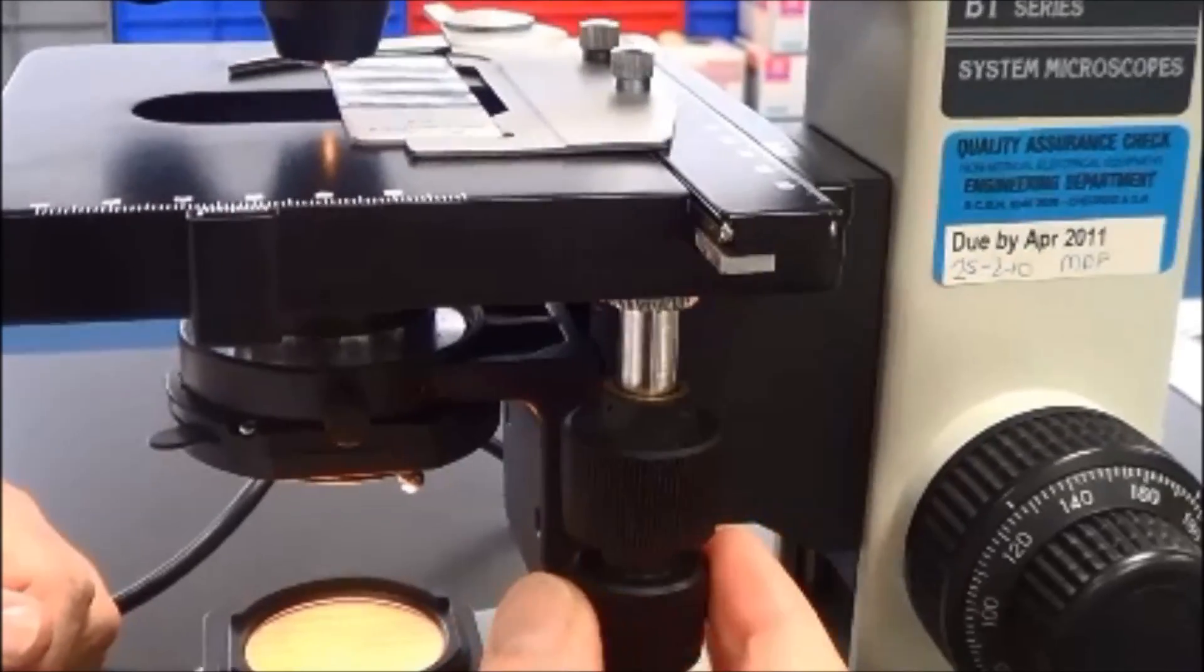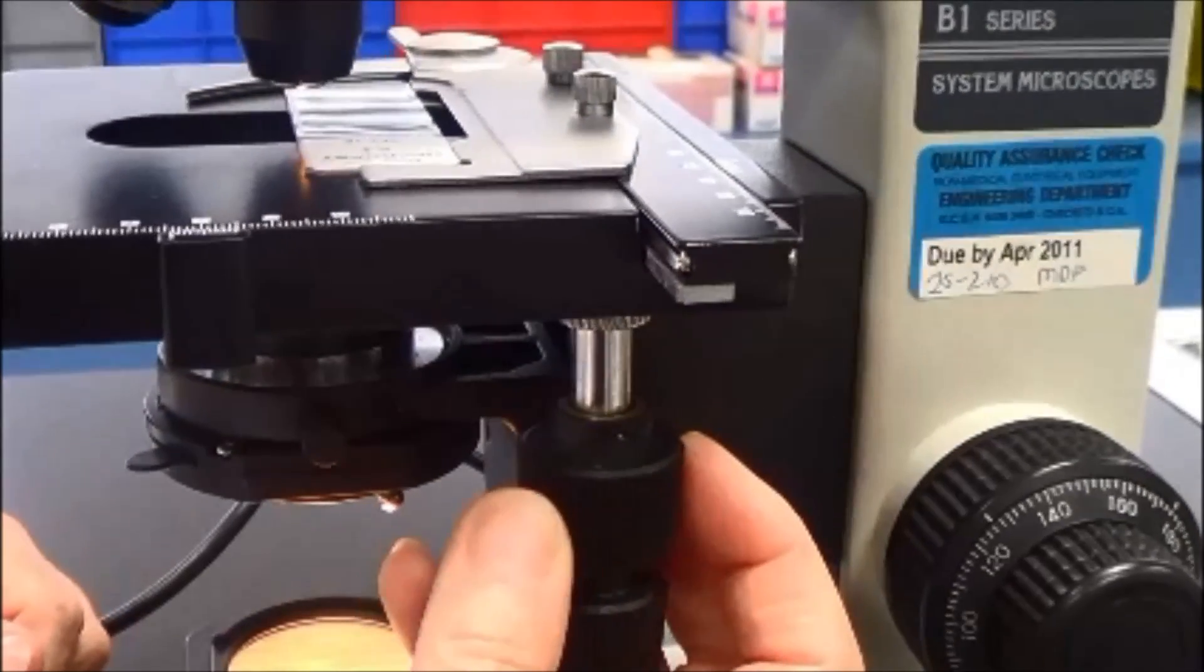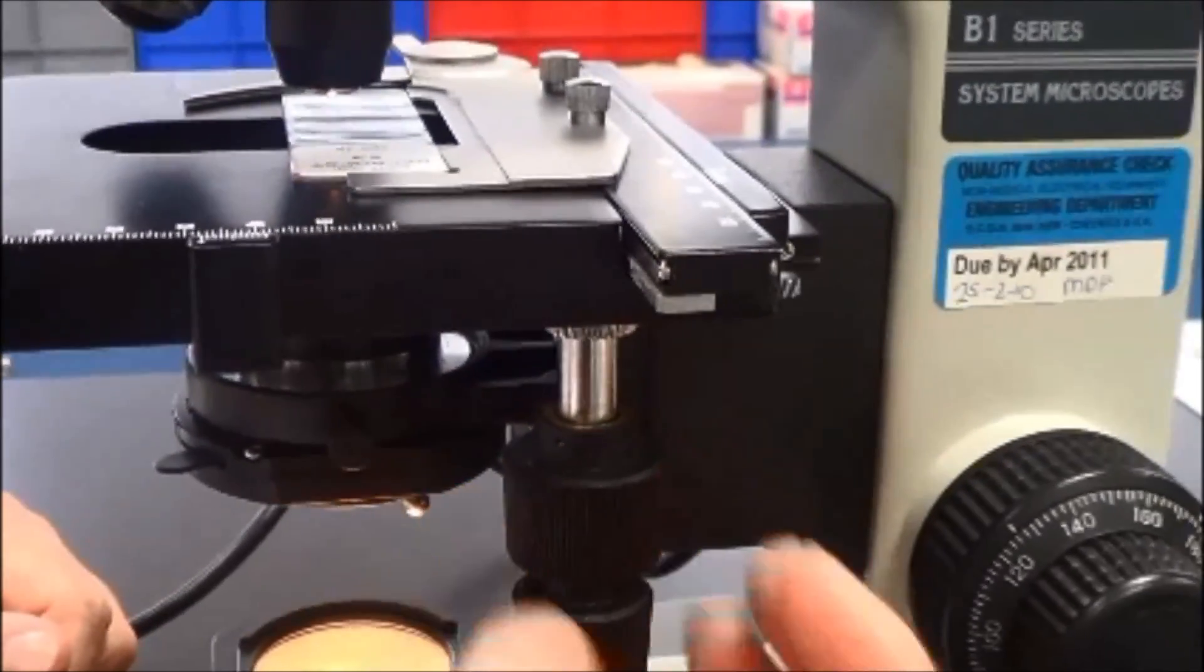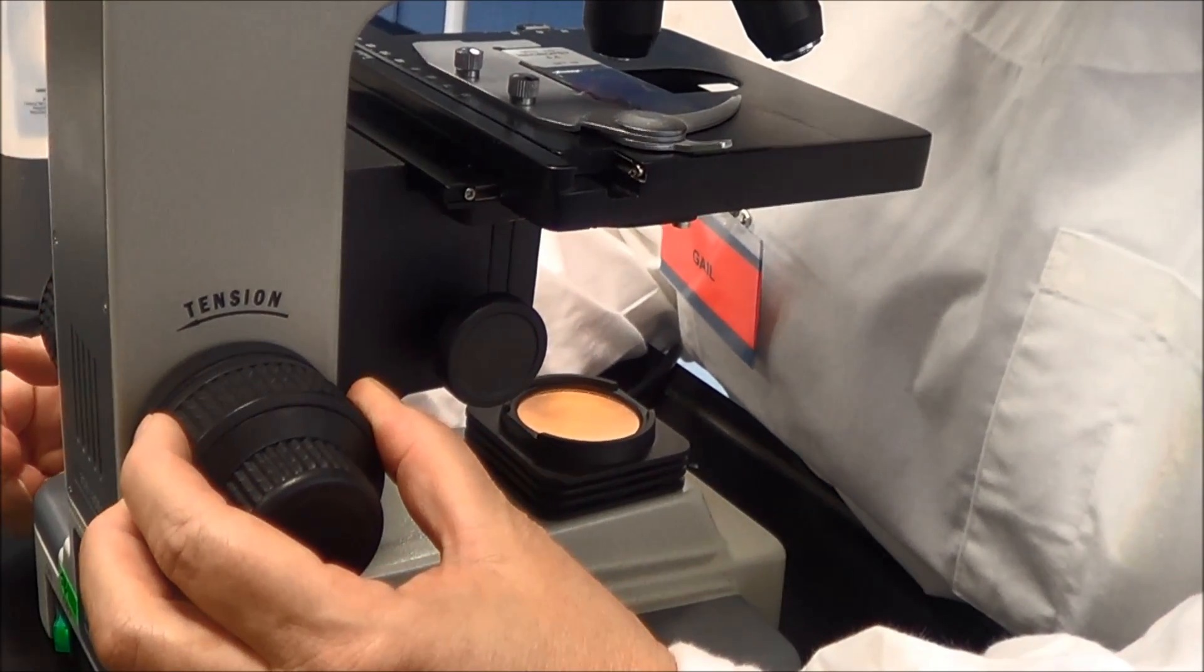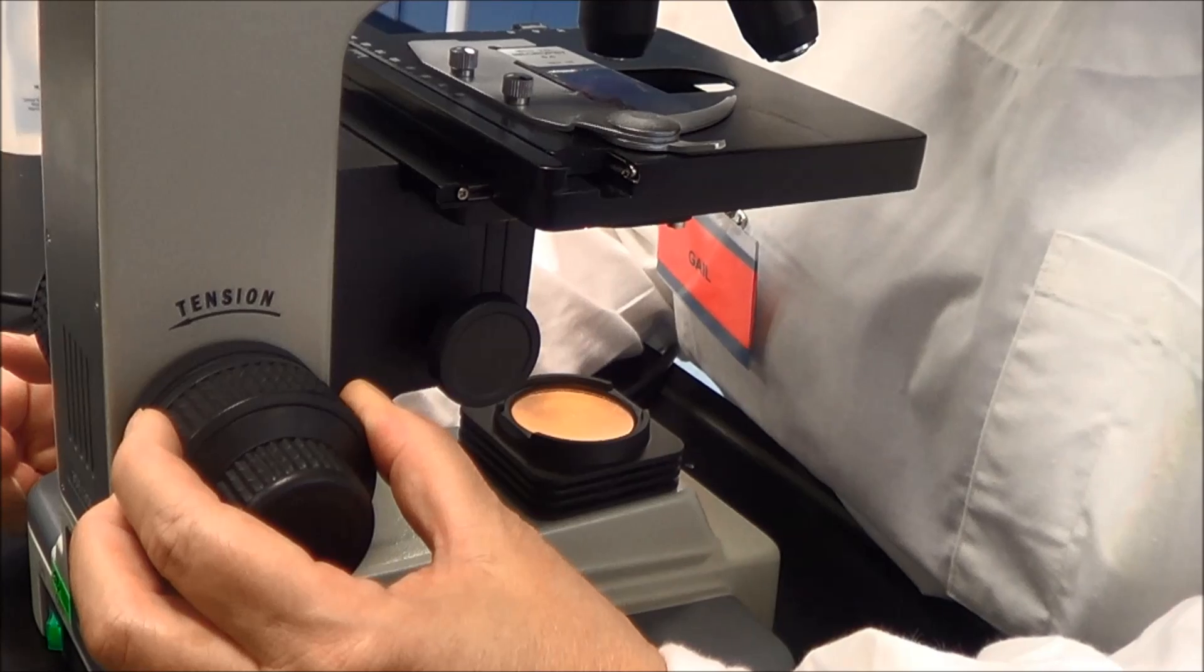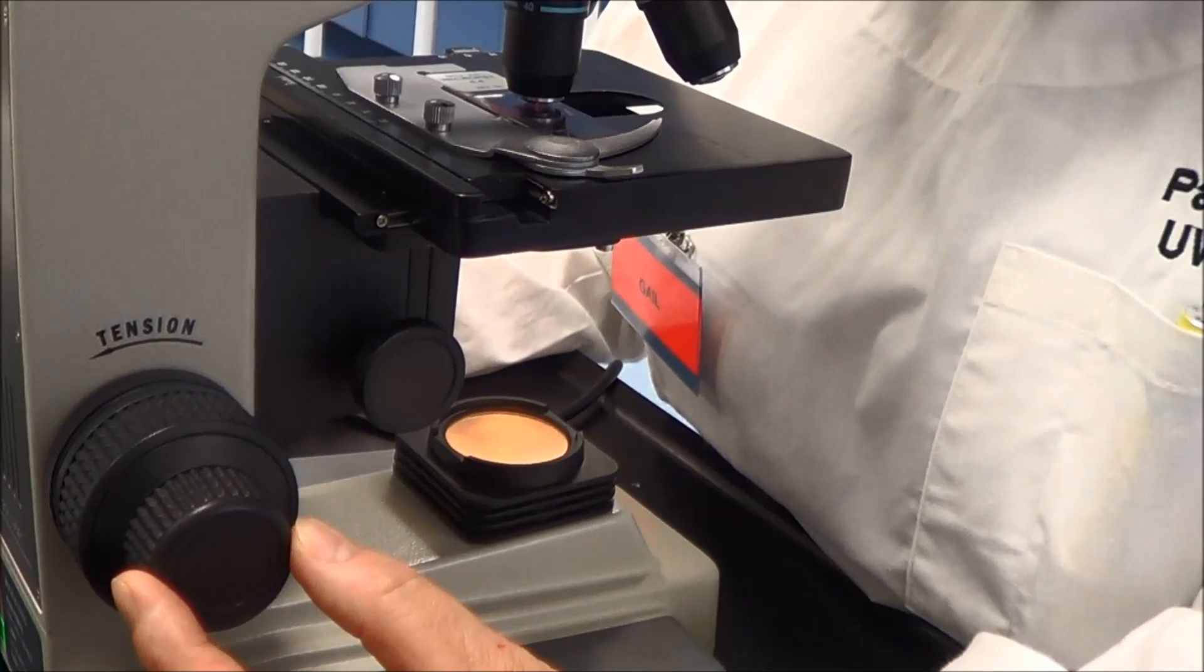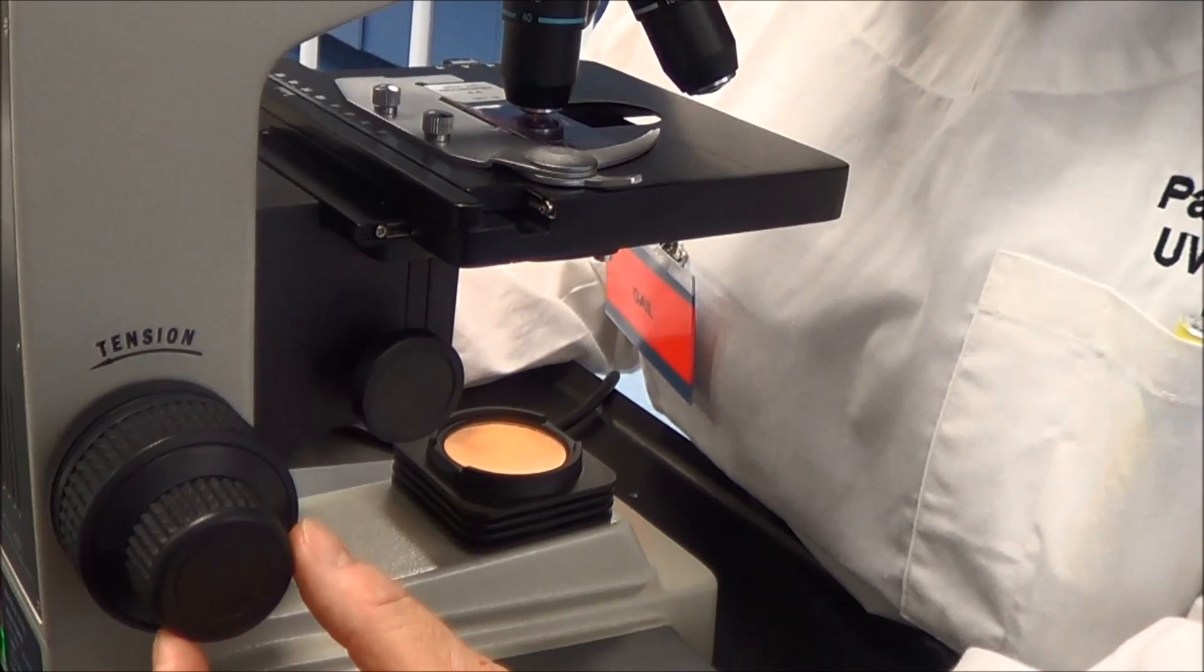Move the slide using the mechanical stage adjustment so that the area of interest is in the field of view. Use the coarse focus control to focus the image by winding gently anti-clockwise until the image appears sharp. Then use the fine focus to clarify the image.